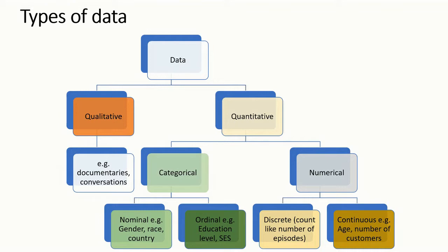In numerical data we have discrete and continuous. Discrete involves a count — for example, the number of episodes you get diarrhea in a year. Then we have continuous, where you can have decimal places within these numbers. For example, you can have 2.5 years, 3.6 years, 36 and a half years. Whereas in a count they are discrete — whole numbers only.